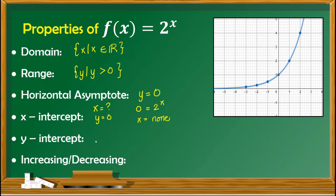As for the y-intercept, this is the value of y when x is 0. Solving for this, we plug in 0 for x: y equals 2 raised to 0. Any number raised to 0 is equal to 1, except for 0 raised to 0. So y equals 1, and the y-intercept is given by (0, 1).